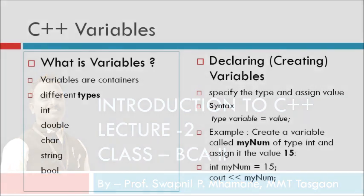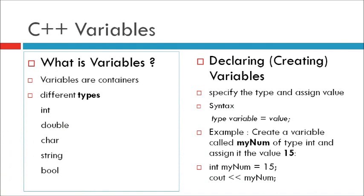C++ variables. C++ variables are containers for storing data values. In C++, there are different types of variables defined with different keywords.